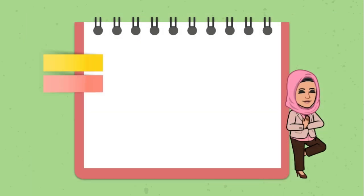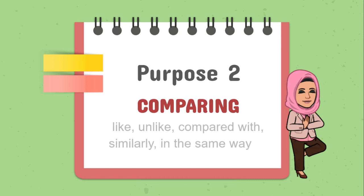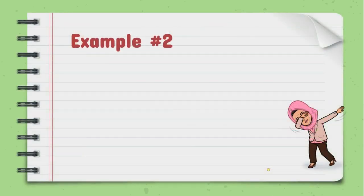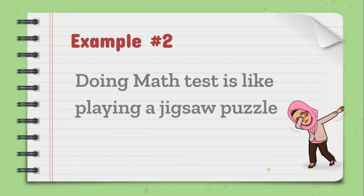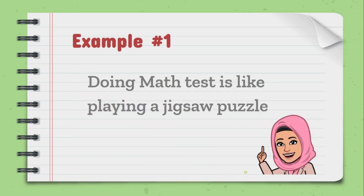Purpose number two is comparing, using connectives like unlike, compared with, similarly, in the same way, etc. For example, doing math tasks is like playing a jigsaw puzzle.